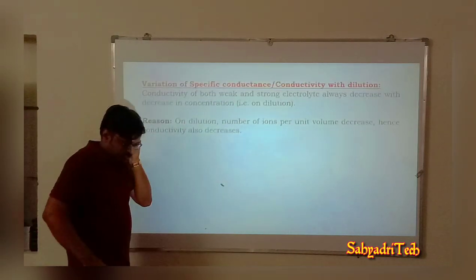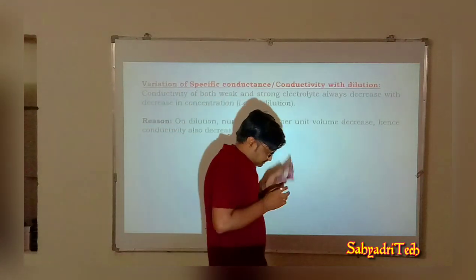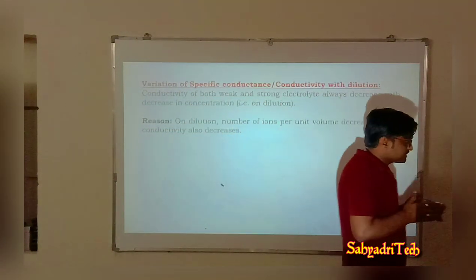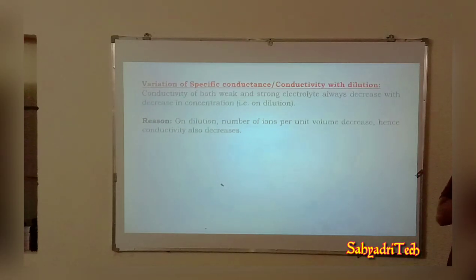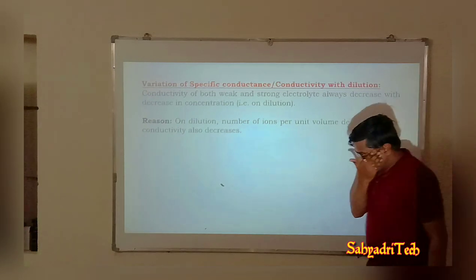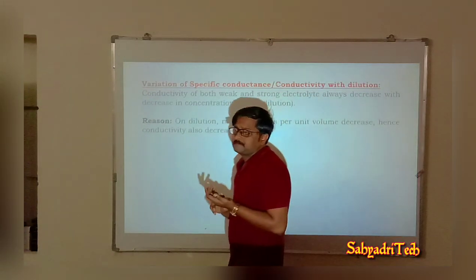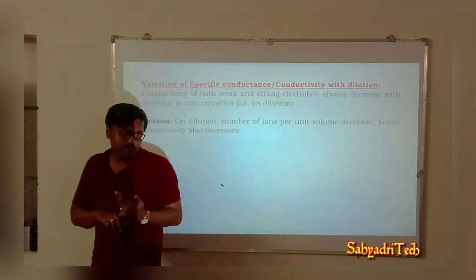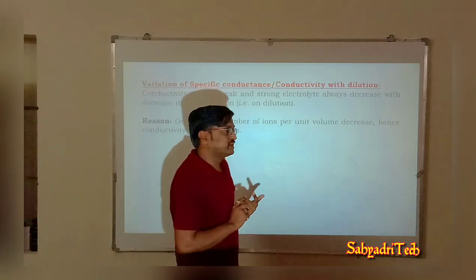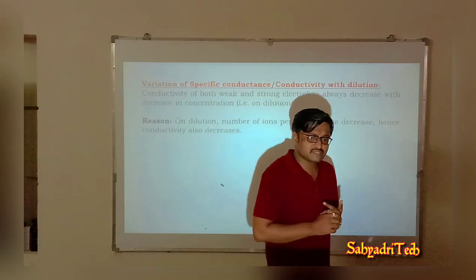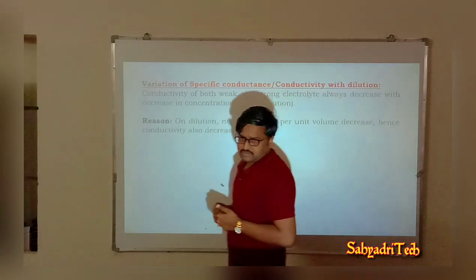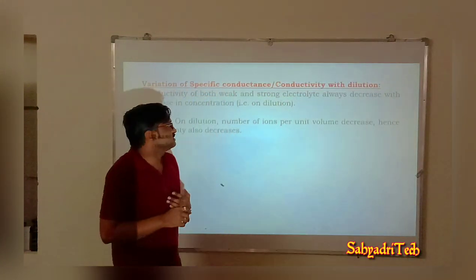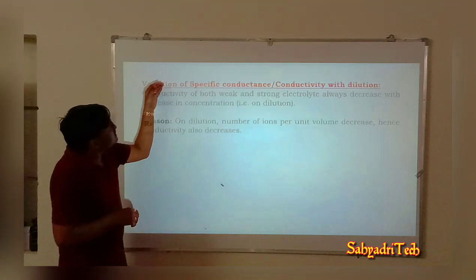Coming to the variation — variation means now, as we considered factors which influence the electrolytic conductors, we studied four factors: nature of the electrolyte added, size of the ion produced and its solvation, third, nature of the solvent and its viscosity, and fourth, we considered temperature. Four major factors we considered.